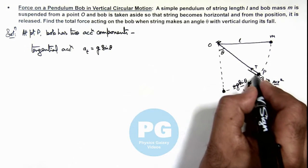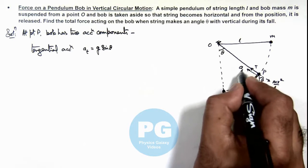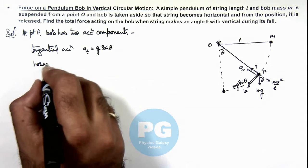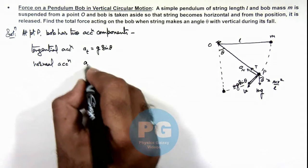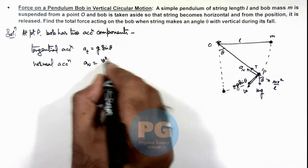And the normal acceleration would be acting toward the center. The other component, normal acceleration a_n, we can write as v² by l.